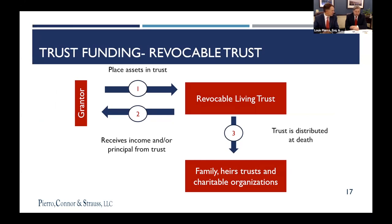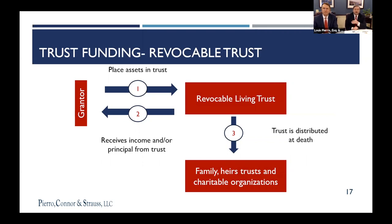A revocable trust is pretty simple and straightforward. The grantor — also called a settlor or trustor — is the person establishing the trust. They put their assets, whether husband and wife or a single person, into the revocable trust. They are the trustee as well, and they are the beneficiary. So in this situation, you're wearing all three hats. You can do with the income and the principal as you choose.